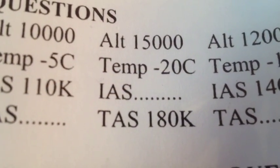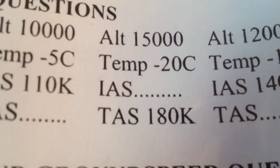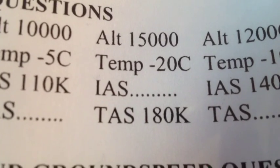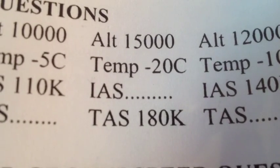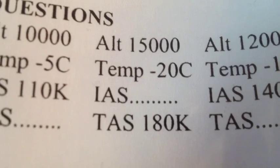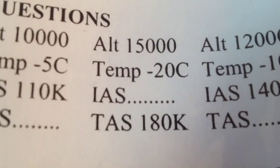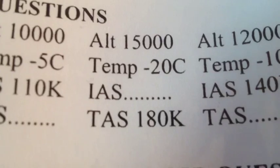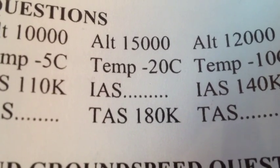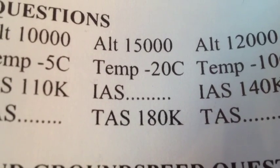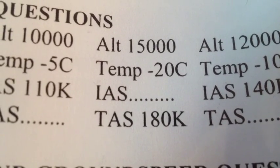The third problem puts a little bit of a twist on this. We're going to give you the true airspeed, and still give you the altitude and pressure altitude parameters, and you're going to have to find the indicated airspeed. We've got 15,000 feet in pressure altitude, minus 20 Celsius in temperature, and a true airspeed of 180. To achieve a true airspeed of 180, what indicated airspeed would we have to fly?